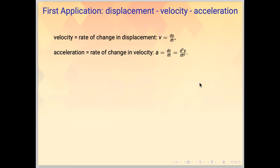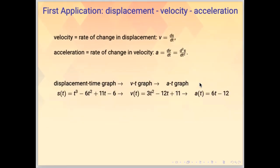Knowing this, if we have a displacement time graph, we can get the velocity time and acceleration time graphs accordingly. For example, here we have the displacement as a cubic function in t. And then by differentiation we get its velocity as a quadratic equation. And the acceleration as a linear function. And we can draw the corresponding graphs.